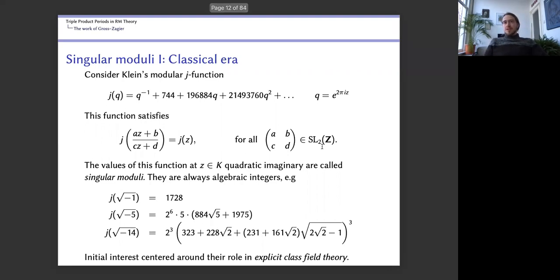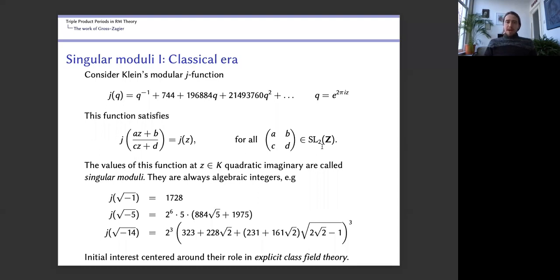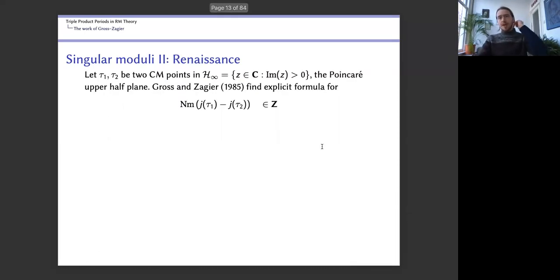Initially, singular moduli were important for explicit class field theory, giving analogues of the Kronecker-Weber theorem to generate abelian extensions of imaginary quadratic fields. After World War Two, the work of Gross and Zagier threw this wide open, using differences of singular moduli to make nontrivial progress towards the Birch and Swinnerton-Dyer conjecture. In the Gross-Zagier setup, you have a pair of CM points τ1, τ2 in the upper half plane, and they consider the differences of singular moduli j(τ1) − j(τ2).